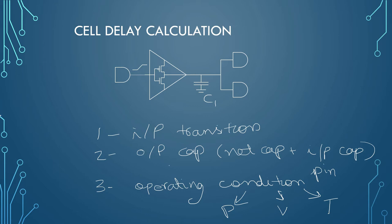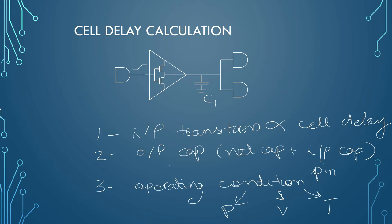For input transition: if your input is rising slowly, your cell delay will increase. If it is fast to rise, your cell delay will decrease. So input transition is directly proportional to cell delay — if it is high, cell delay will be high; if input transition is low, cell delay will also decrease. Output capacitance follows the same direct proportionality: if output load is high, capacitance is high, and because of that your cell delay will be high.